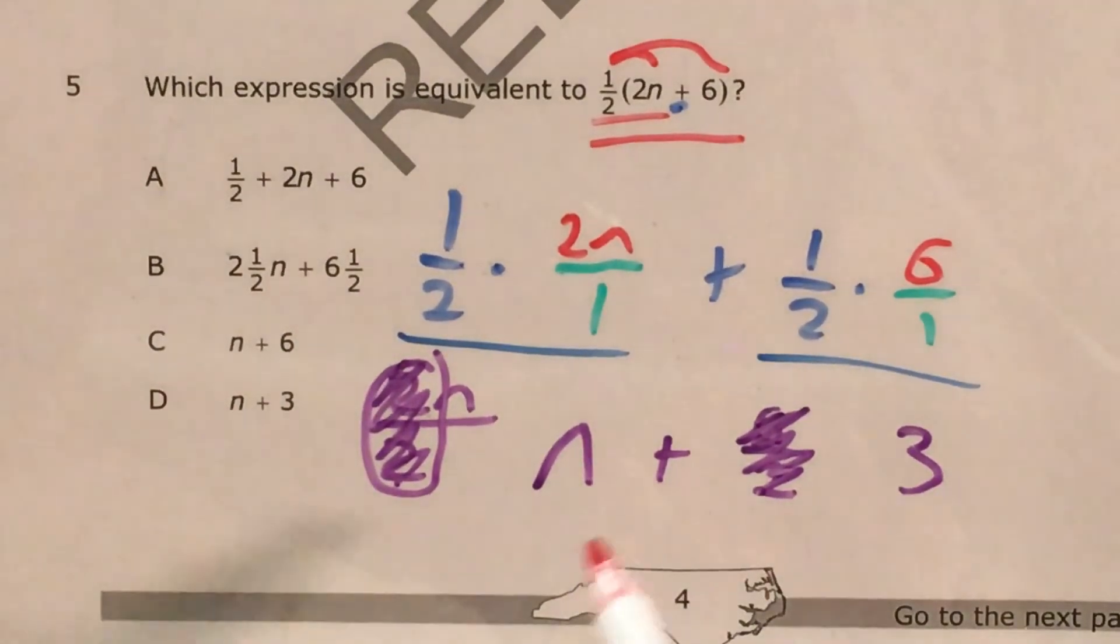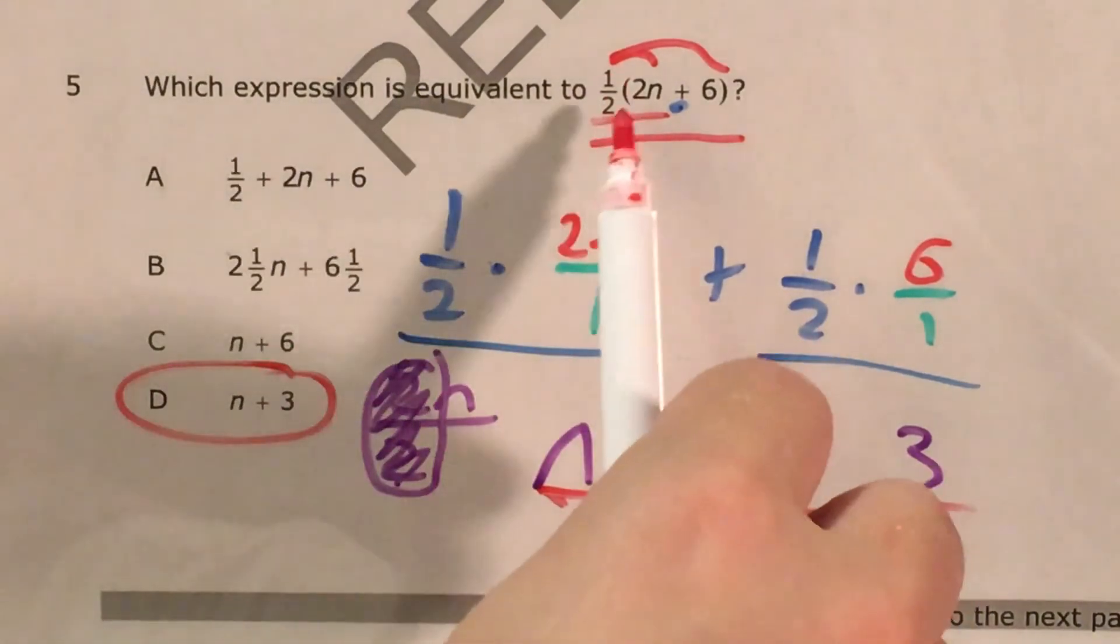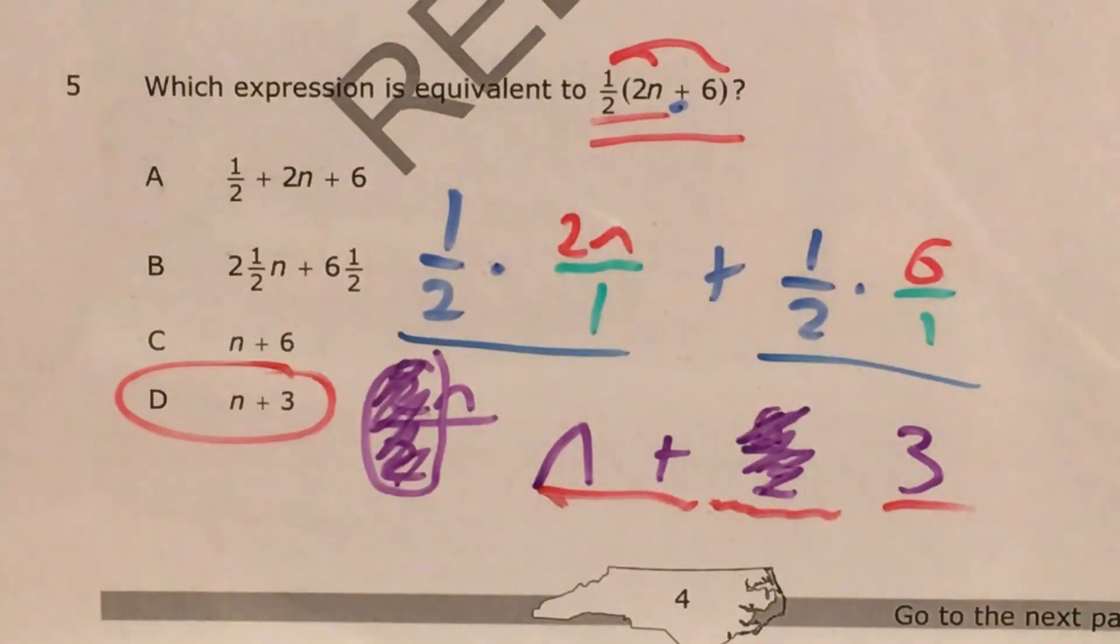So we're looking for an answer that has n plus 3. And it looks like that answer is choice D. n plus 3 is equivalent to 1 half times 2n plus 6.